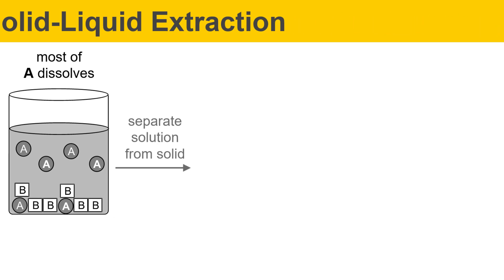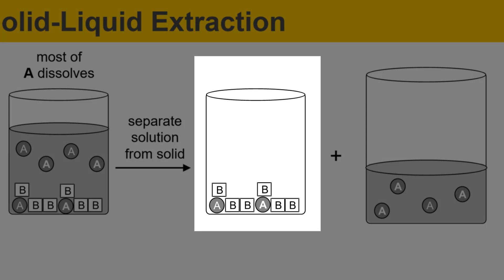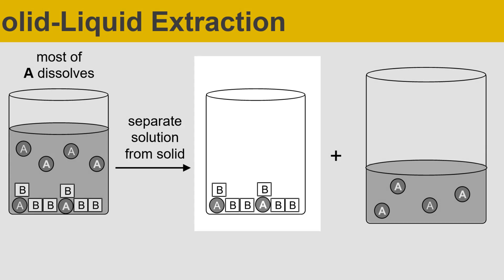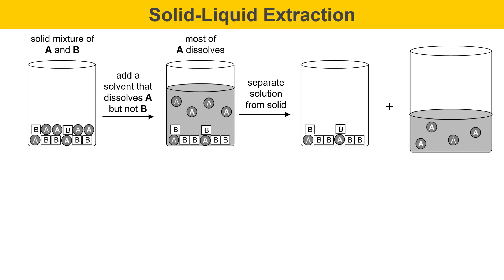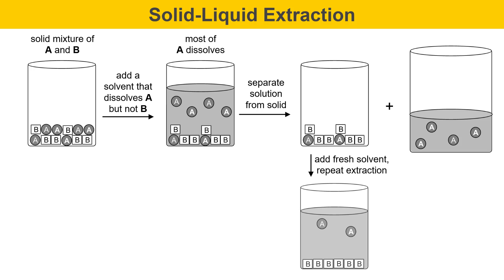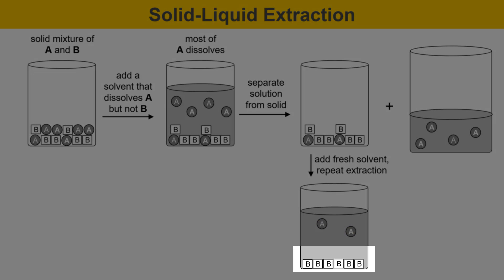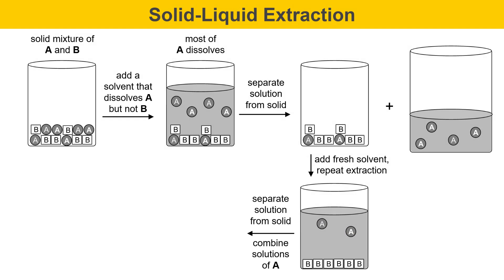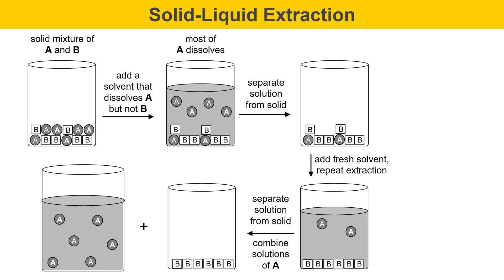Then we need to separate the solution from the solid. We can do that by filtration or simply pouring off the liquid solution, giving us two materials: a beaker on the left containing the residue — mostly B with a little bit of A — and a beaker on the right containing a filtered solution of A. Now I'm going to do another extraction of the solid residue to recover more of the A material. I'll add a fresh portion of solvent, swirl it around, and hopefully most of the remaining A dissolves. Then I'll separate the solution from the solid, giving me a residue of solid B and a solution of A, which I'll combine with the previous solution. Now I have two containers: one with the solution of A, the other with solid B — the materials have been separated.